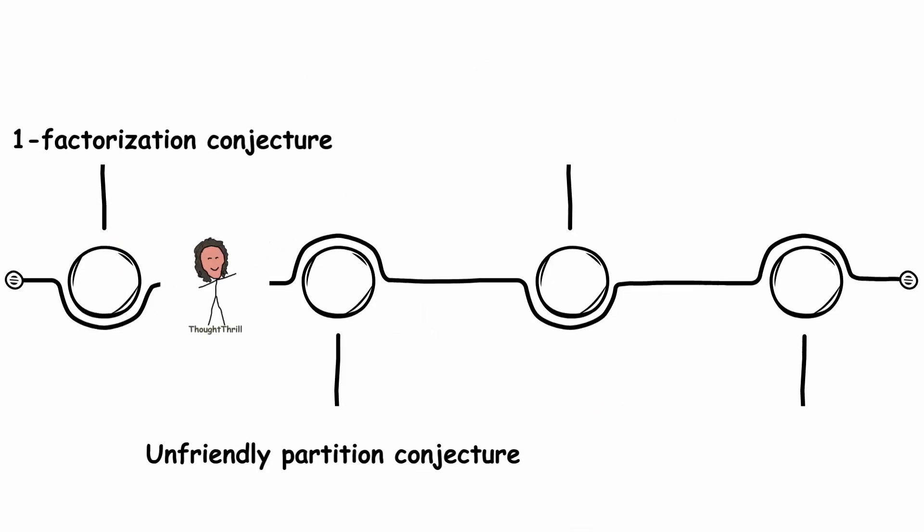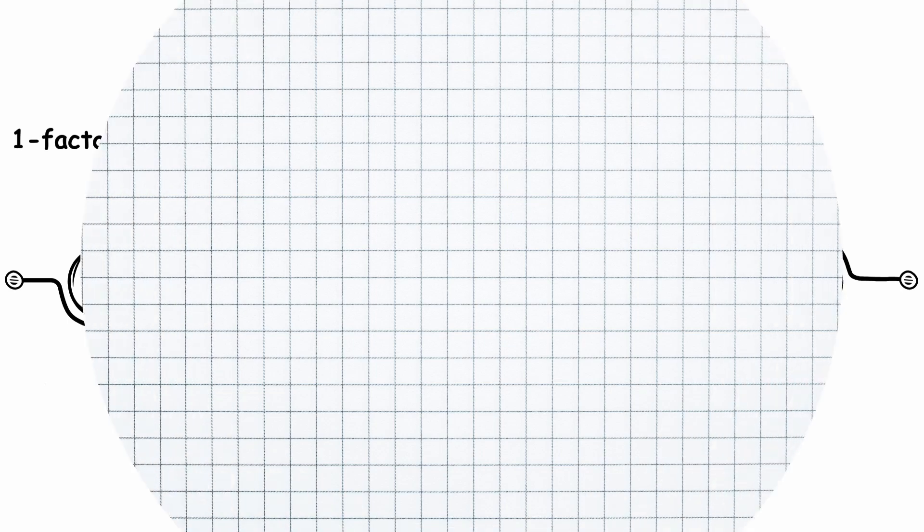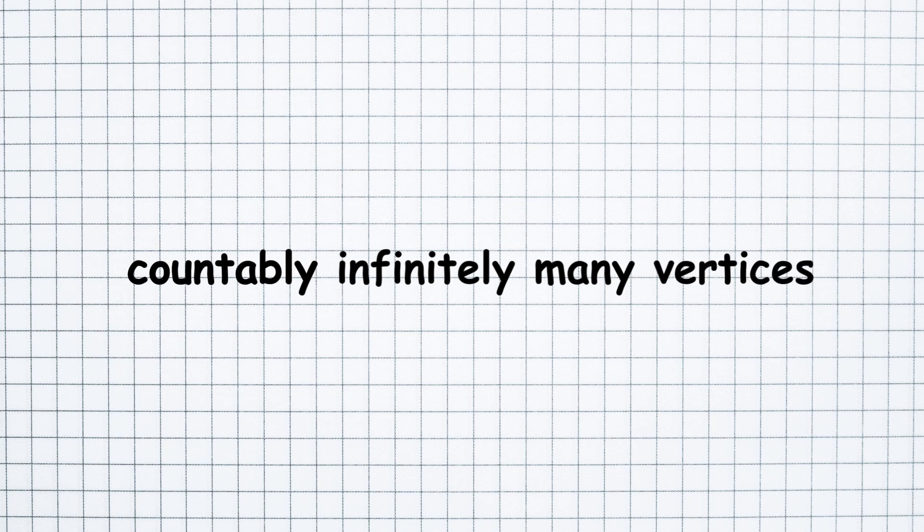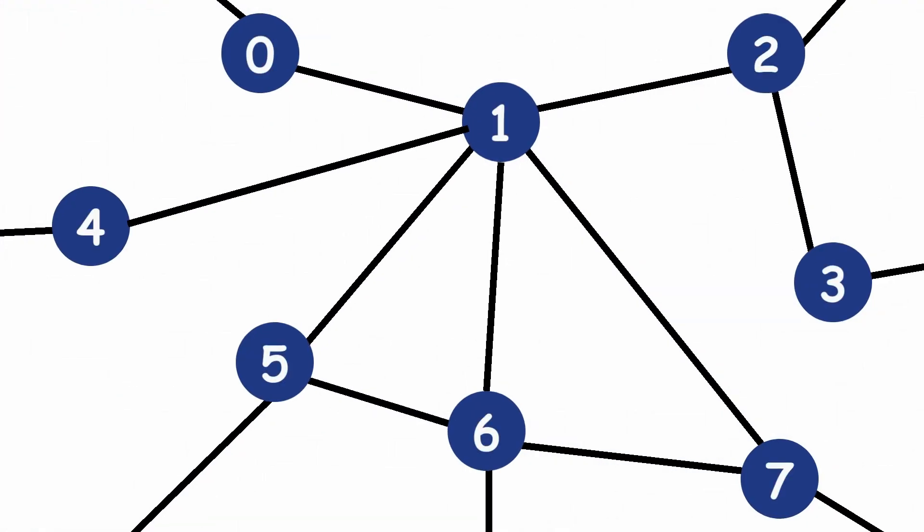Unfriendly partition conjecture. Let's visit the world of infinite graphs. In particular, we will consider graphs with countably infinitely many vertices, meaning that the vertices of the graph can be put in a 1 to 1 correspondence with a set of natural numbers.